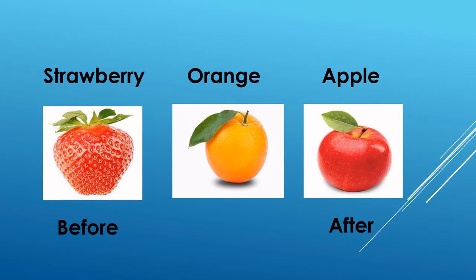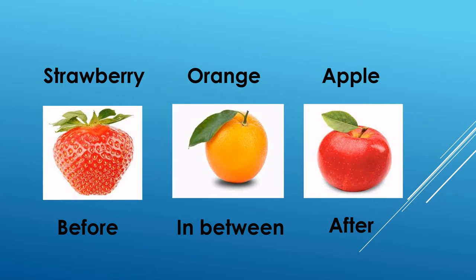Now in this slide we see strawberry — strawberry is placed before the orange, whereas apple is placed after the orange, and orange is in between strawberry and apple. In the third slide we can see a car is placed before the scooter, the bus is placed after the scooter, and the scooter is placed in between the car and the bus.